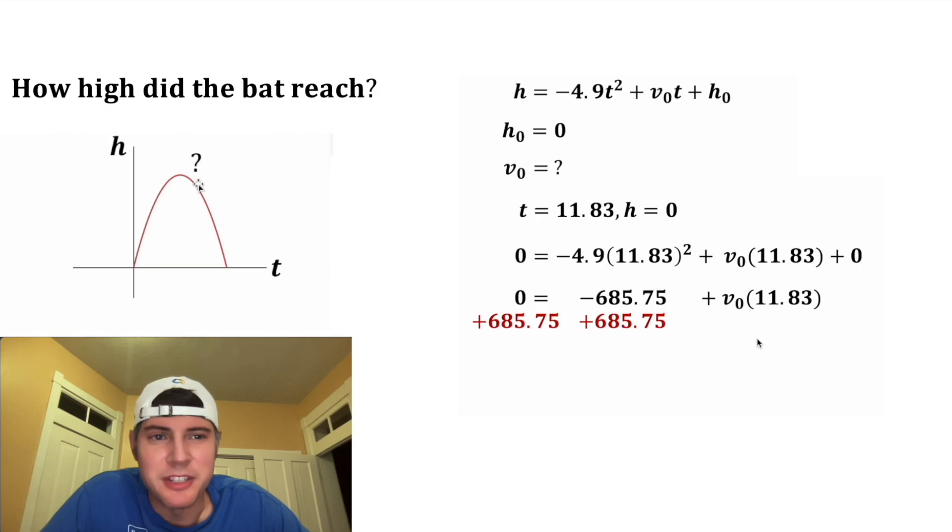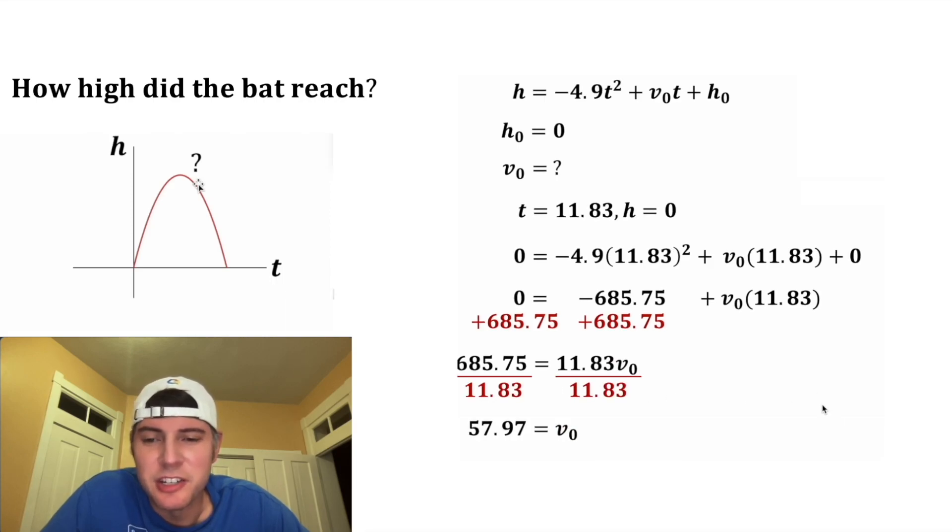Let's add 685.75 to both sides. We end up with 685.75 equals 11.83 times the initial velocity. After we divide both sides by 11.83, we get the initial velocity is 57.97, and that's measured in meters per second.